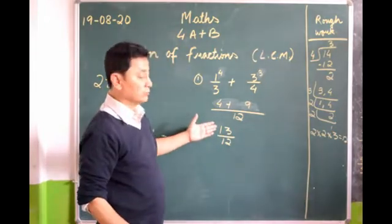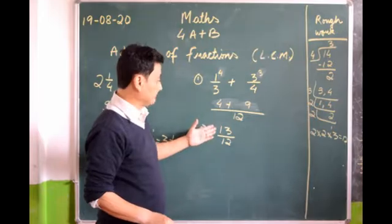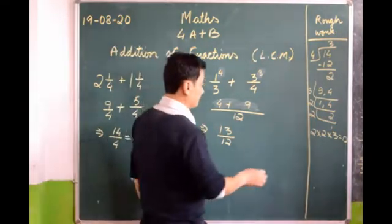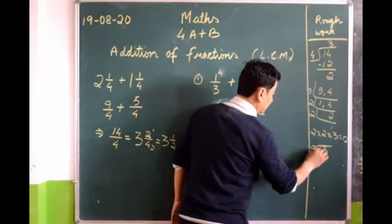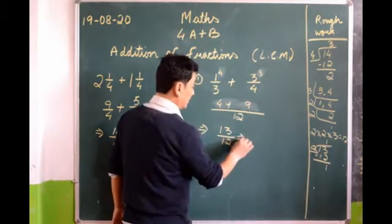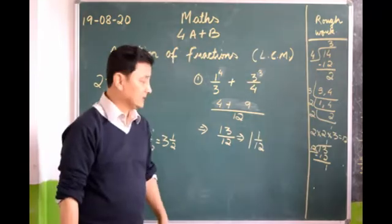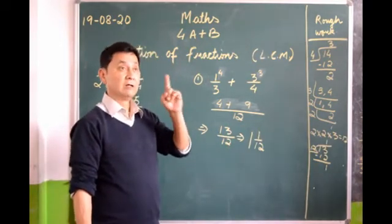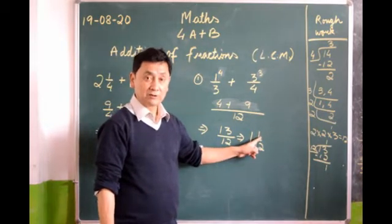Here the numerator is bigger than the denominator, so it is an improper fraction and must be converted back into a mixed number. 13 divided by 12: 12 ones are 12, and 13 minus 12 is 1, so the answer is 1 and 1/12. For those who can do it mentally: 12 goes into 13 one time, 12 ones are 12, plus 1 is 13. So the answer is 1 and 1/12.